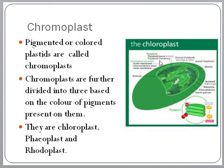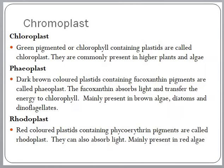Pigmented or colored plastids are called chromoplasts. These chromoplasts are further divided into three based on the color of pigments present in them: chloroplast, phaioplast, and rhodoplast. Chloroplasts are chlorophyll-containing plastids and they are green pigmented. They are commonly present in higher plants and green algae.